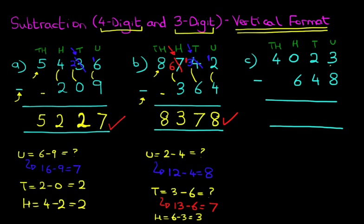Starting on the right-hand side, we've got three minus eight. Now three is smaller than eight, so we cannot do this. Let's have a look at the tens — we're going to take one from here. So let's cross out the two. Two minus one is one, and the one we have taken from here we're going to add it to the units column. So the units has now become 13 minus eight. 13 minus eight is five.